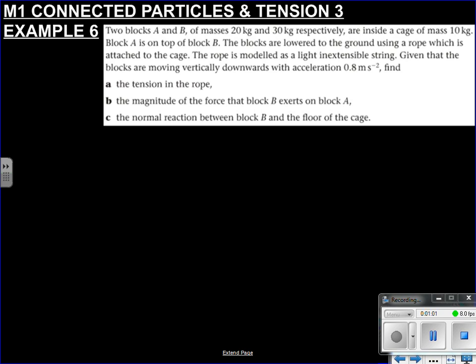Two blocks A and B of masses 20kg and 30kg respectively are inside a cage of mass 10kg. This is very similar to the scale pan, except it's not a light scale pan situation. So I'm going to draw a scale pan, but remember this isn't a light one, this one in itself has a weight of 10g. And inside are two blocks A and B, where A is on top of B.